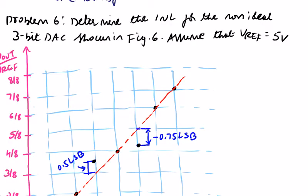Now look at this problem: the transfer curve is given. Determine the INL for the non-ideal 3-bit DAC as shown below. Assume V reference equals 5 volts. The transfer curve and step heights are given, along with how much each point is deviated. We need to see which points are deviated from the ideal slope — that is the reference line.